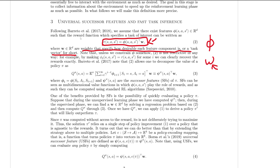And w is — at least the way they put it in this paper — weights that specify how desirable each feature component is, or a task vector for short. It specifies some sort of task. Now this equation alone isn't very significant. What is very important is once we take this and plug it into the equation down here, we get a very interesting result. What you see is a discounted sum of these phi or feature vectors. From the very start of the episode, we have phi one, phi two, and so on up to phi n in the episodic case. We add all these up and discount them by a gamma term. In successor features, this discounted sum of feature vectors is referred to as psi.